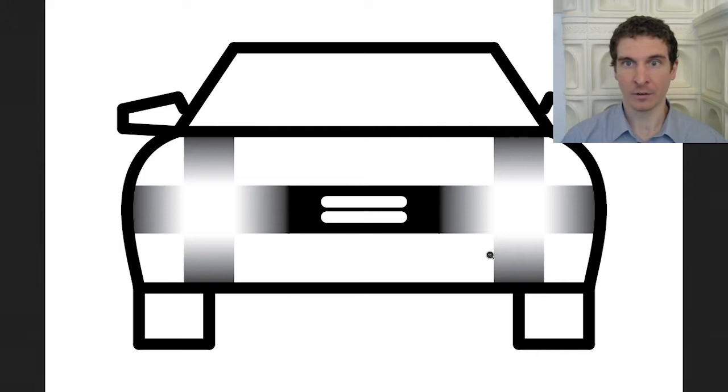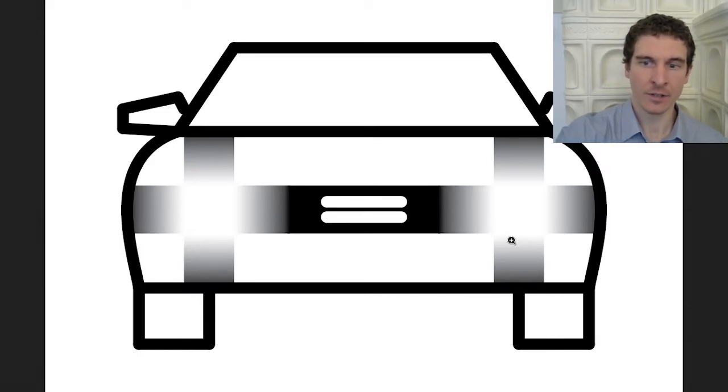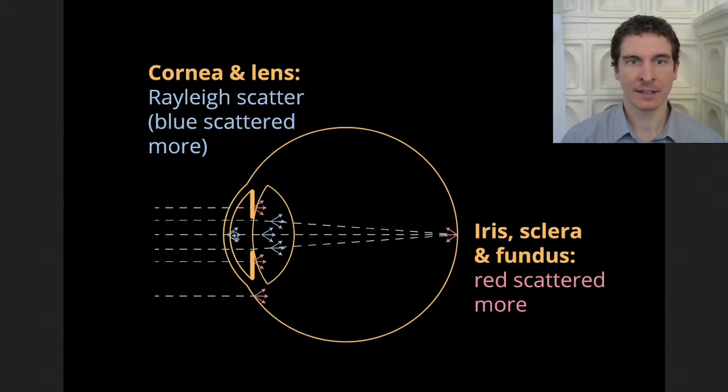In the previous video, we saw that a Gaussian intensity distribution is a visual cue for glare. One of the reasons why that is the case is that light also scatters within the eye. The two most important optical media in this question are the cornea and the lens, both of which scatter blue light more.